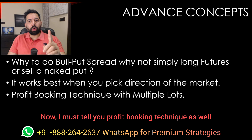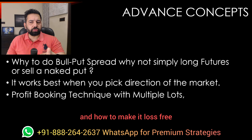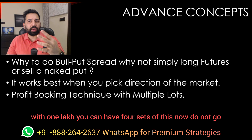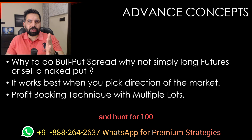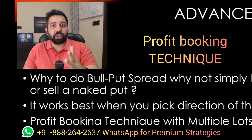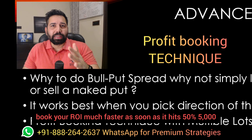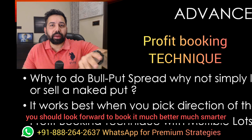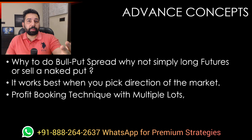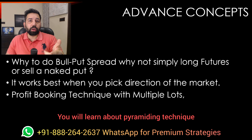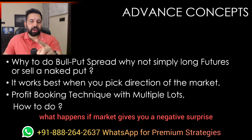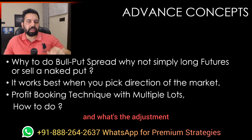Now, let me tell you the profit booking technique with multiple lots and how to make it loss-free. It takes around 25,000 rupees to make this trade — ultra economical. With 1 lakh, you can have four sets of this. Do not hunt for 100% profit potential. For example, if the maximum profit is around 10,000, do not go for 10,000. Book your ROI much faster. As soon as it hits 50% — say 5,000 — look to book it. Always better to book profit in tranches using the pyramiding technique when exiting. Now let me tell you what happens if the market gives you a negative surprise and what adjustment you can do.